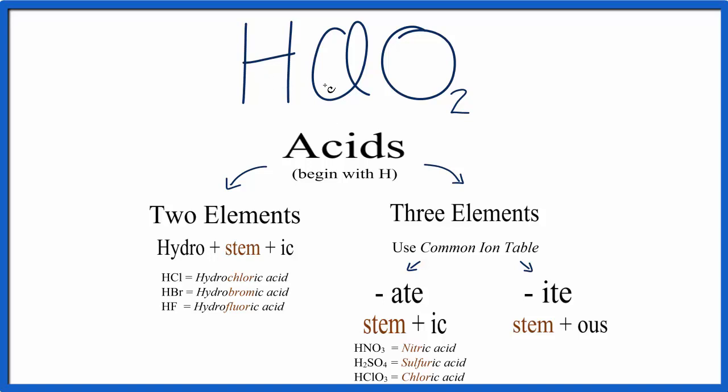When we look at it, we can see one, two, three different elements, and we have an oxygen. So that means we're going to use this part of the flowchart right here.